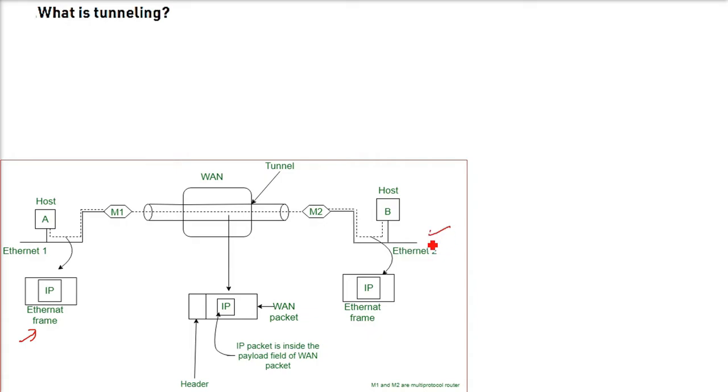In between, it has to pass through a WAN. Now WAN packet is different. IP packet is different from Ethernet frame.